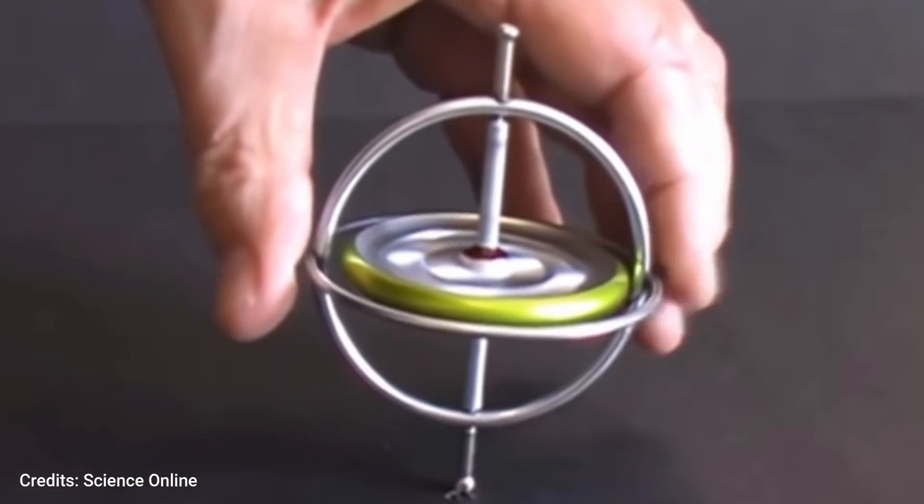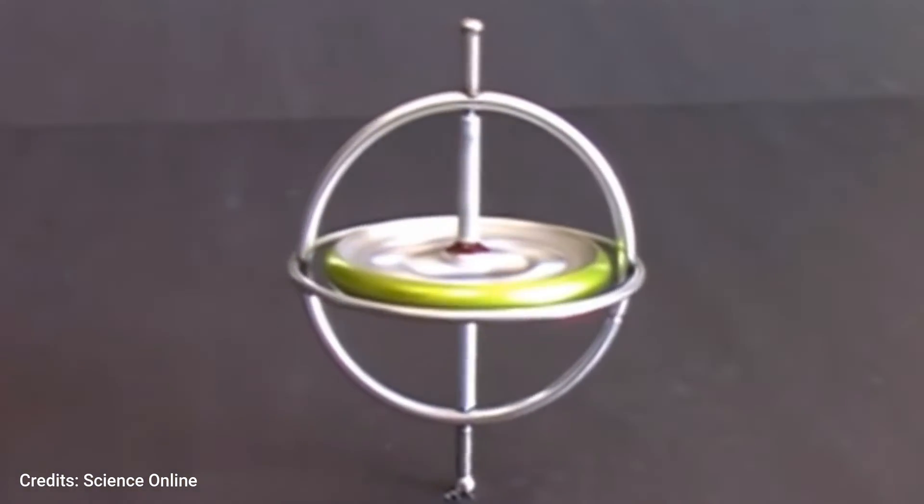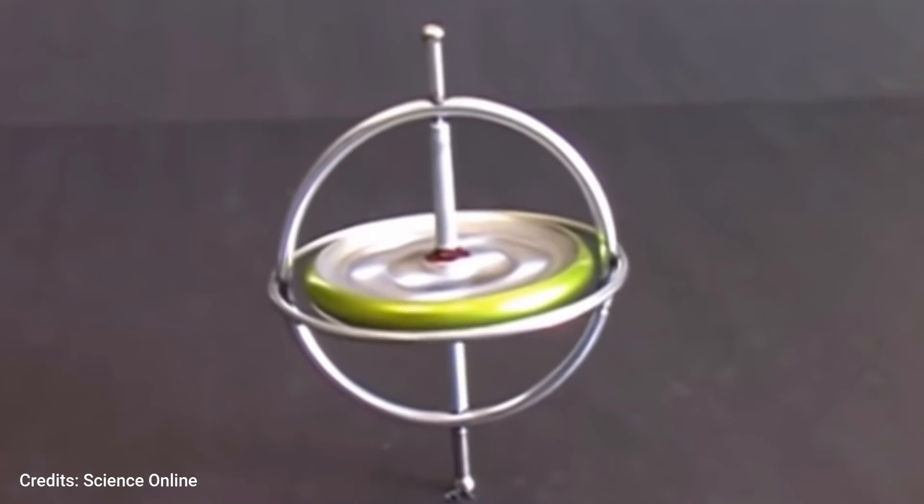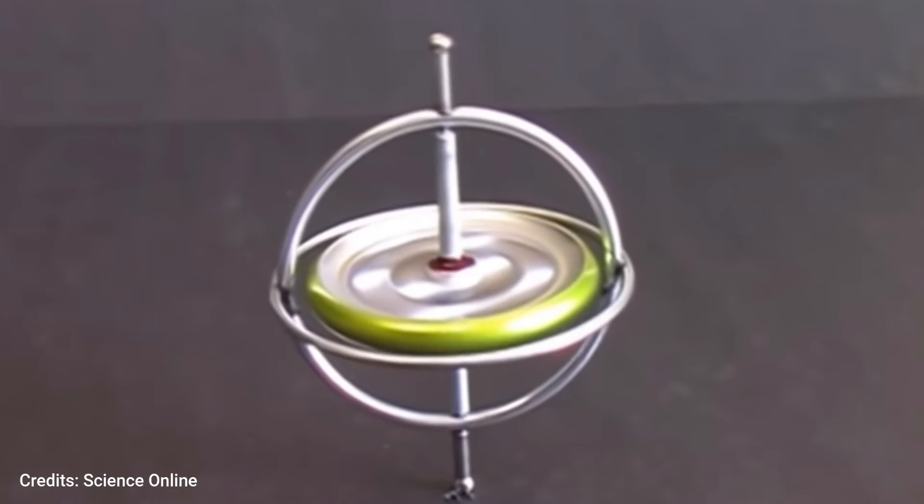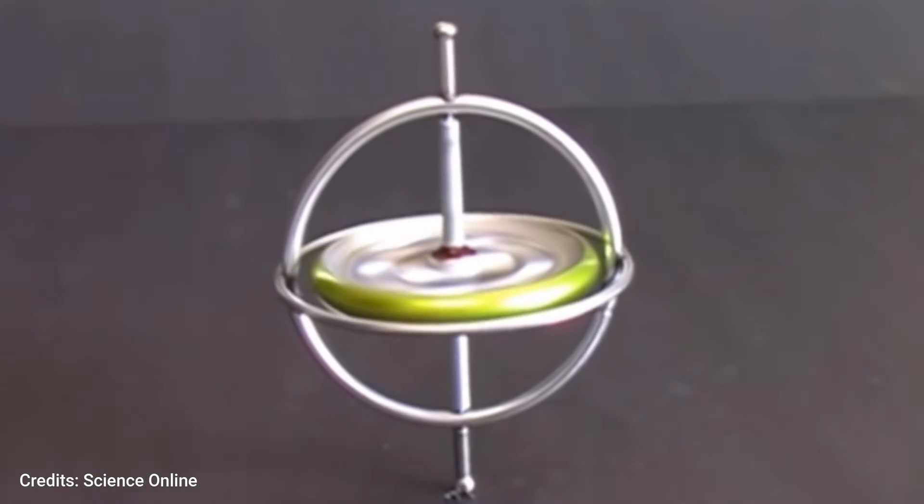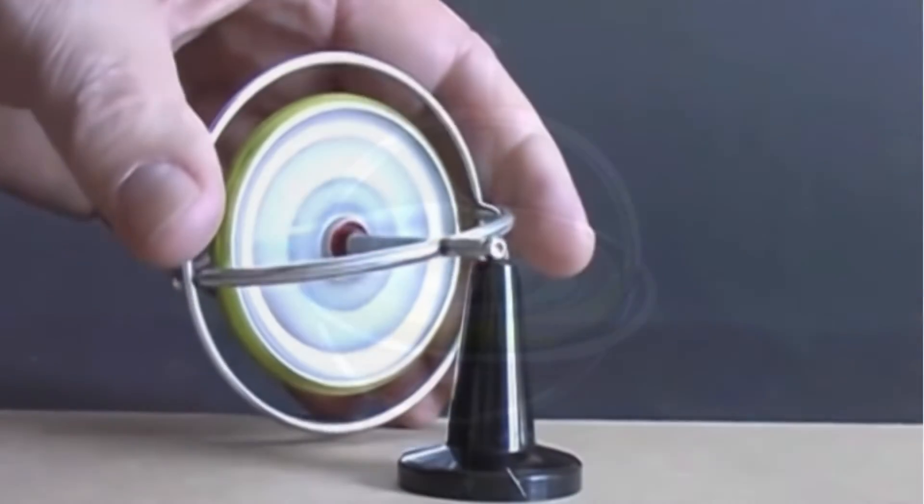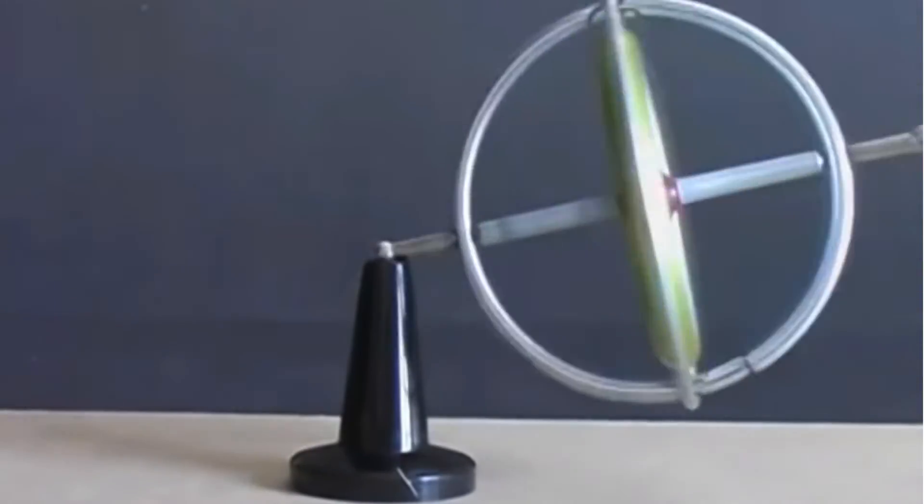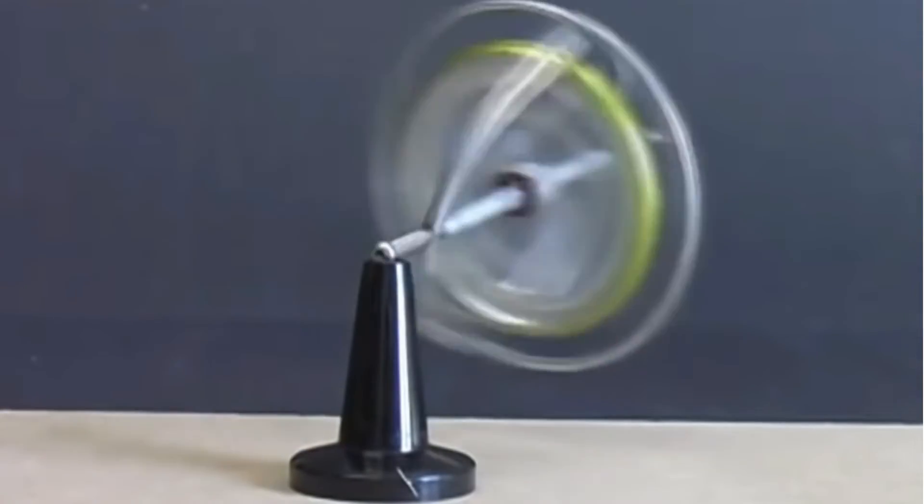Next, let's turn to the famous gyroscope. Here, the spinning wheel produces an angular momentum that is keeping the gyroscope upright. If you observe carefully, you will see that the gyroscope is also precessing about the vertical axis. Now, if we place the gyroscope like this, then the precession becomes very apparent. During precession, the axis of the spinning object describes a cone in space.